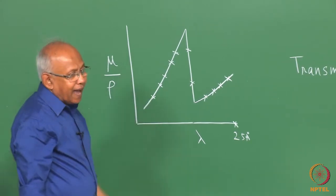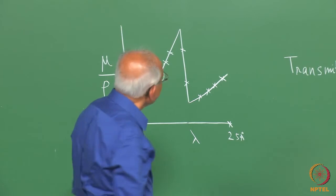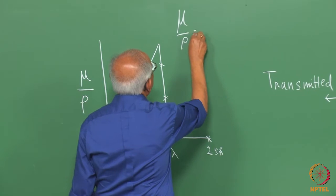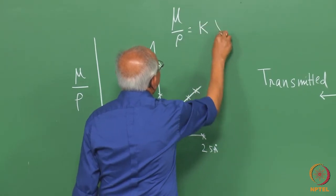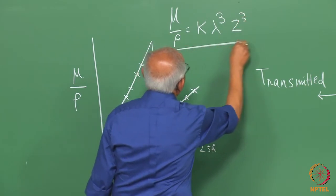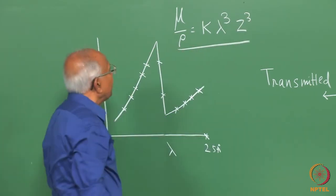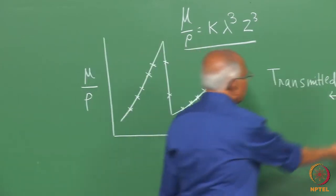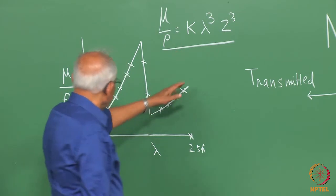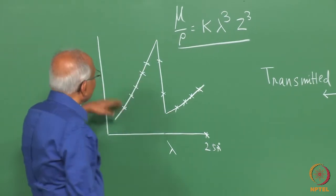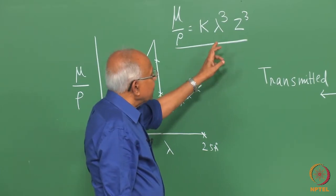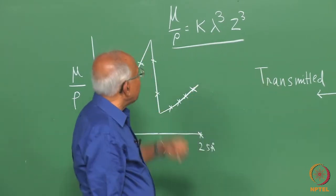If we look at this, we find that mu by rho essentially can be written as k lambda cubed z cubed, where z is atomic number of the absorbing element, k is a constant whose value is different for the two different parts of the curve, and lambda is the radiation with which the nickel is bombarded in this case.